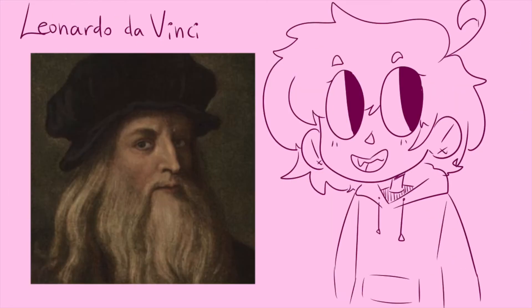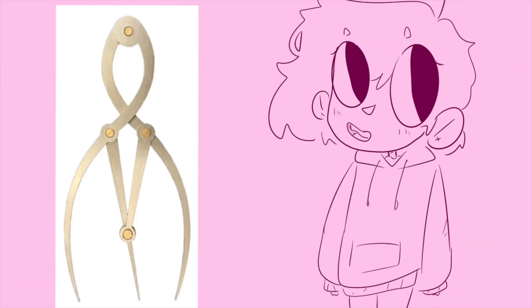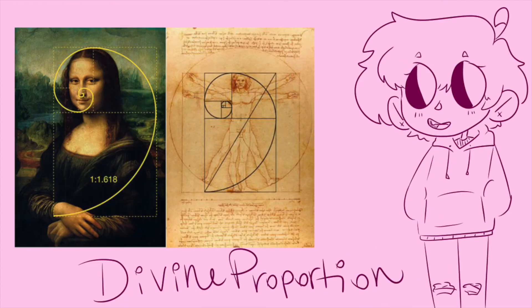The golden ratio was especially utilized by Leonardo da Vinci — like in the Last Supper, where all the key dimensions of the room were based on the golden ratio, and in the Annunciation, to name a couple. He used golden ratio calipers to make sure his works were in proportion.